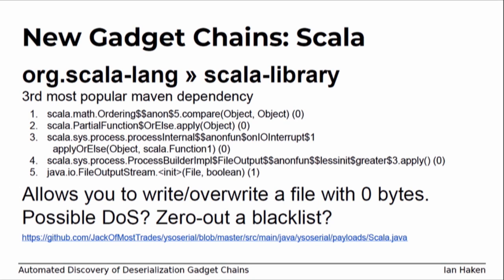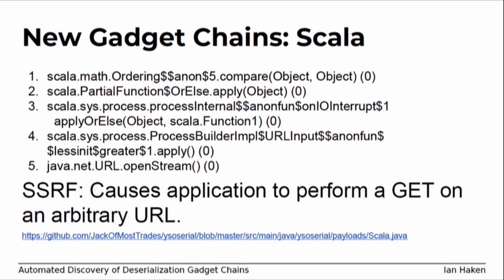More recently I discovered some new gadget chains in Scala — the third most popular dependency. This gadget chain isn't an RCE, but it allows you to write or overwrite a zero-byte file on disk — an interesting DOS exploit, because you can overwrite some application resource file, zero it out, and your app goes down. There's also a very similar one that does an SSRF, performing a GET on an arbitrary URL. I've got examples of the actual gadget chain payloads on my fork of YSO Serial — and I did actually build the corresponding gadget chains and verify that these work.